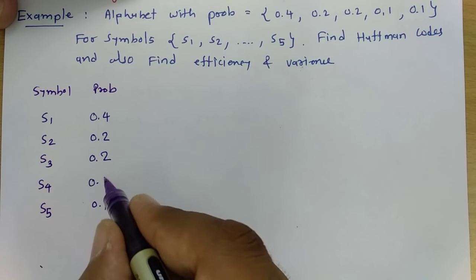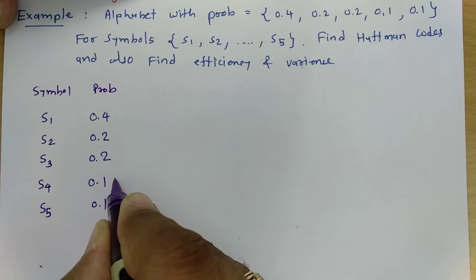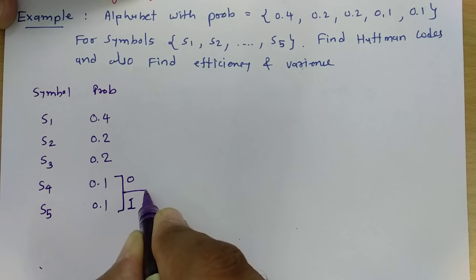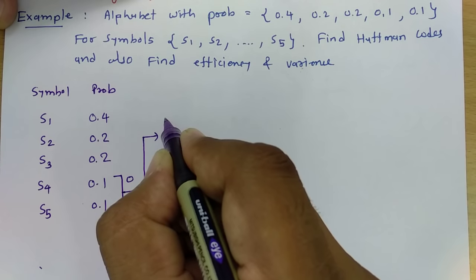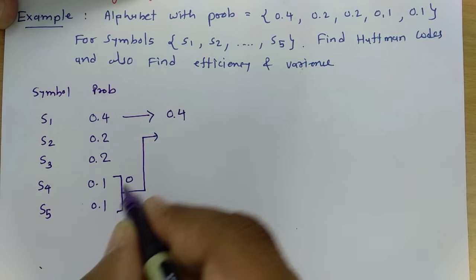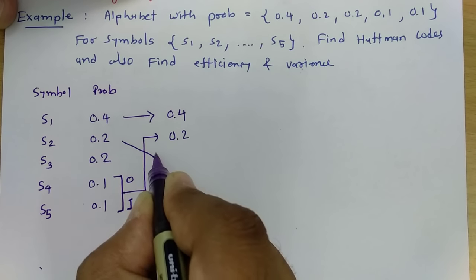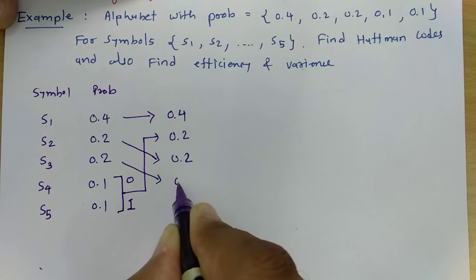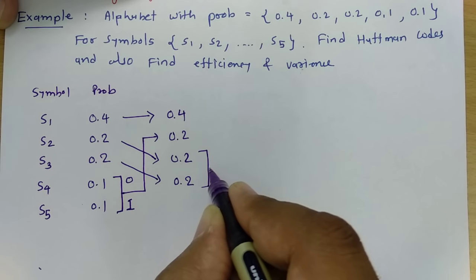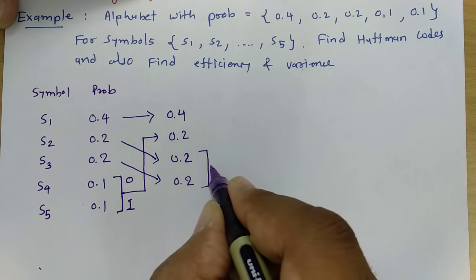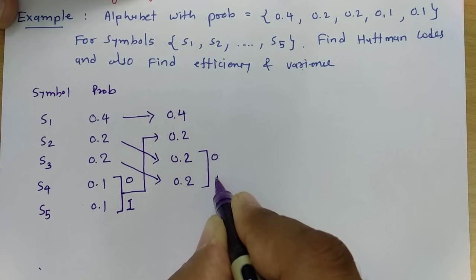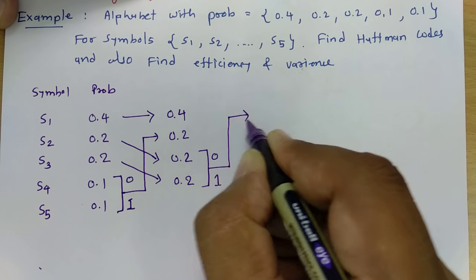The next step is to add the last two probabilities and move the result as high as possible. We add S4 and S5: assign 0 to one and 1 to the other. Their sum is 0.1 plus 0.1 equals 0.2. This combined 0.2 shifts up to join the other 0.2 values. We can move it up to the position alongside 0.4, since that is where it fits in descending order.